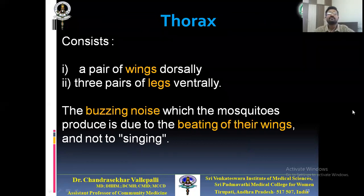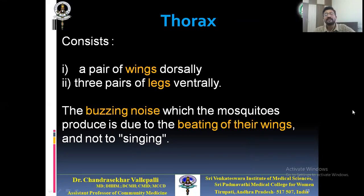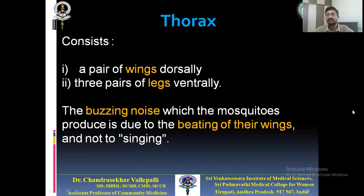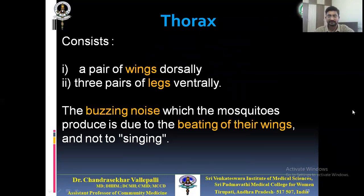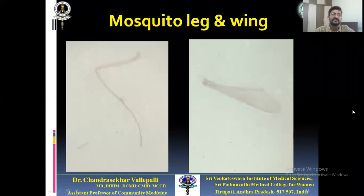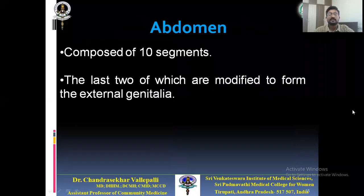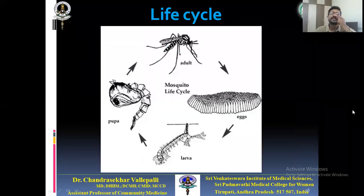The thorax has a pair of wings dorsally and three pairs of legs ventrally — all Insecta have three pairs of legs. The buzzing noise mosquitoes produce is due to vigorous beating of their wings, not singing. The abdomen is composed of 10 segments, the last two of which are modified to form the external genitalia.